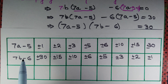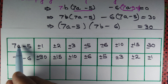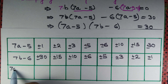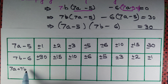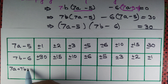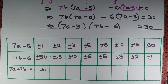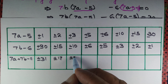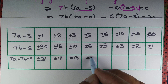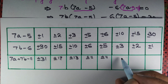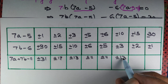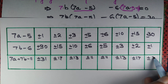Adding the two expressions: (7a - 5) + (7b - 6) = 7a + 7b - 11. Adding each factor pair gives sums of: ±31, ±17, ±13, ±11. So 7(a + b) - 11 can equal ±31, ±17, ±13, or ±11.